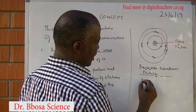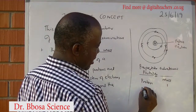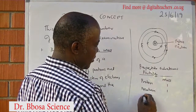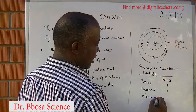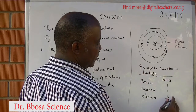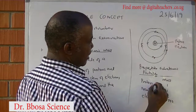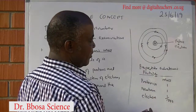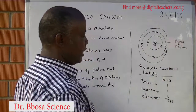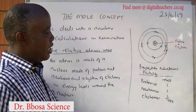Properties of subatomic particles: we have protons, neutrons, and electrons. The mass of a proton (p) is 1. The mass of a neutron (n) is 1. The mass of an electron (e) is 1 over 1843 times the mass of a proton.